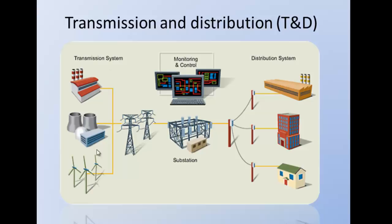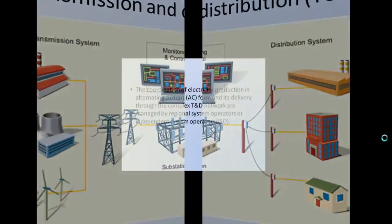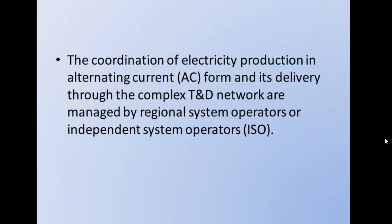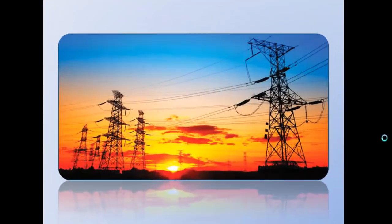This one is a transmission system. Aloncity uses enormous fans — this green fan — and we can transfer it through monitoring and control, then substation, and then distribute it through the distribution system. The system not only needs to balance electricity production and consumption in real time, but also must ensure that electricity produced remotely is transported to customer sites without running into congestion on the T&D network.